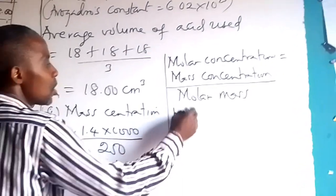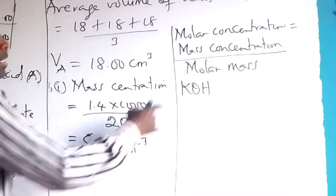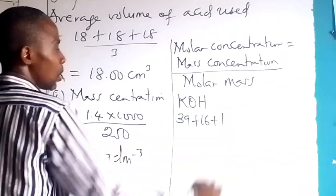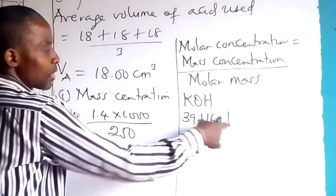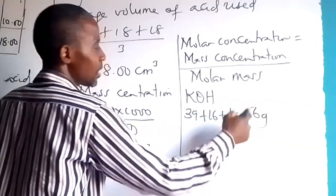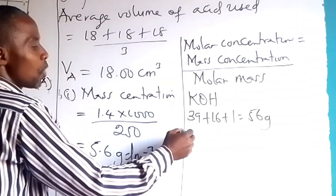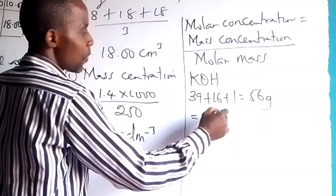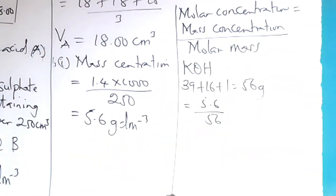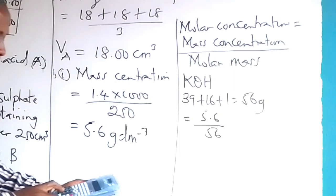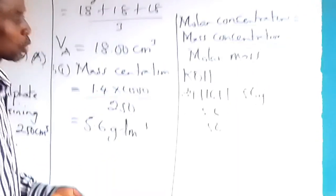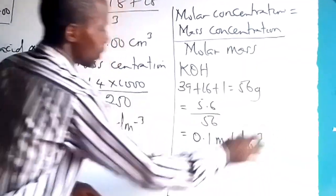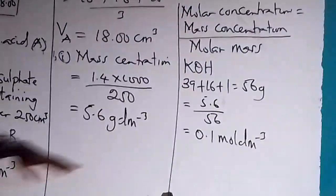So I will write molar concentration. Molar concentration is equal to mass concentration over molar mass. So let's get the molar mass of KOH, potassium hydroxide. Now potassium is what? 39 plus 16 plus 1. This is 40, 56. Therefore concentration in moles per dm³ is mass concentration, 5.6 divided by 56. We give us what? 0.1. So this is the answer here, 0.1 moles per dm³.